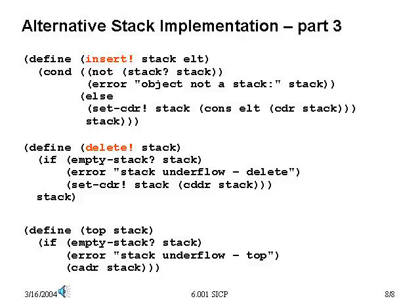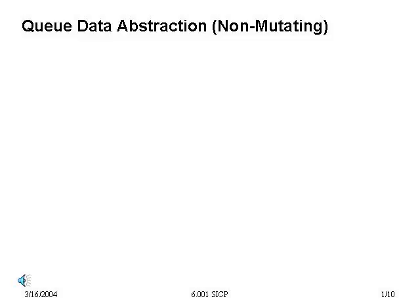Here we see how mutation gives us additional power. It gives us the ability to change parts of a structure without using up much space, and yet preserve the identity of the overall structure. Now let's look at a slightly more complex data abstraction: the queue.